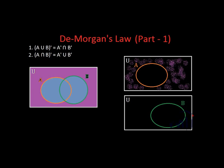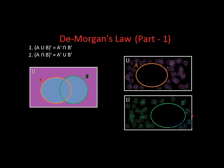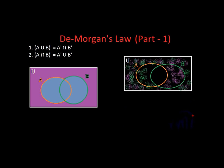Similarly, if we talk about the complement of set B, this area will represent the complement of set B — the area which has all elements of the universal set which are not in set B. Now, to find the intersection of A complement and B complement, let me overlap these two diagrams and see the area where we have both green and purple color. That overlapping area will be the intersection of A complement and B complement.